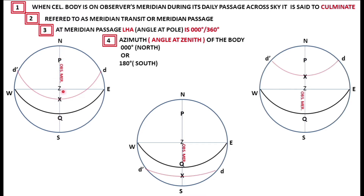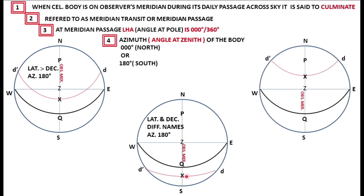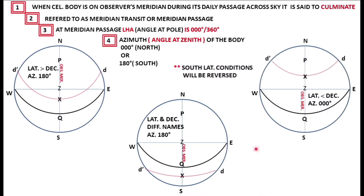There is no angle being formed at the zenith — it is 0 or 180 depending upon which way you are looking. If you are looking up, it's 0; when looking down, it is 180. If the latitude is greater than the declination, the azimuth would be 180. When they have got different names, again azimuth is 180. When the latitude is less than the declination, the azimuth is north. These conditions will change if your latitude was southern latitude.